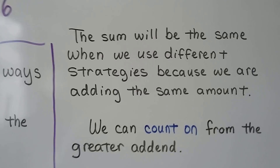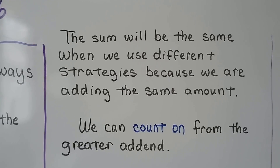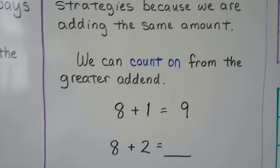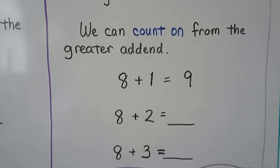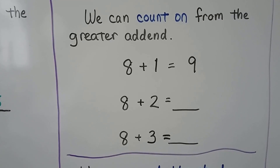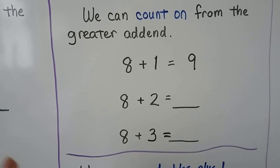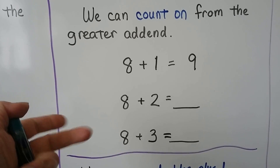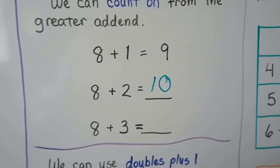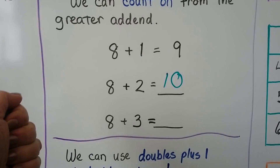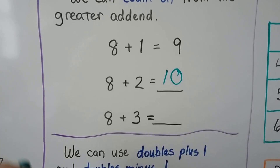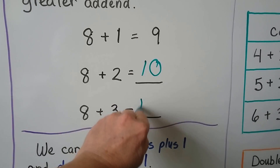The sum will be the same when we use different strategies because we're adding the same amount. We can count on from the greater addend: eight plus one equals nine — eight, nine. Eight plus two — eight is the greater addend — eight, nine, ten. Eight plus two is equal to ten. Eight plus three, we start with the greater addend, eight — nine, ten, eleven. Eight plus three is equal to eleven.